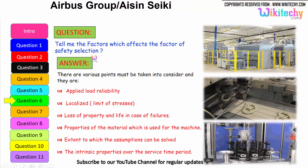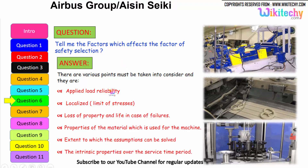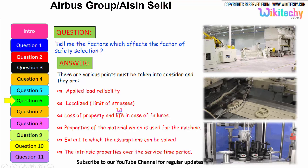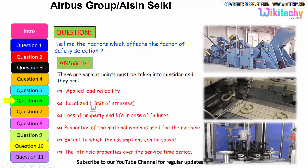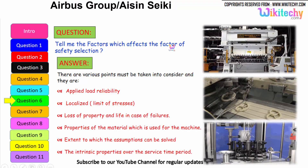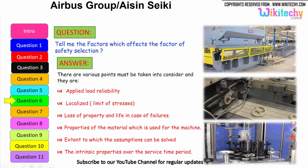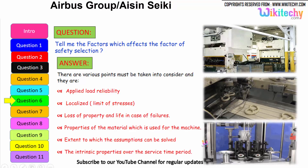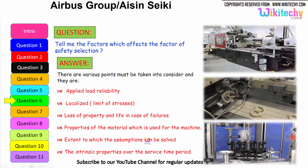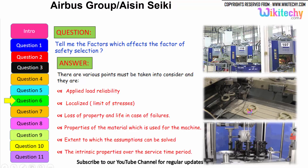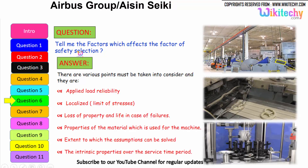Let us see the factors which affect the factor of safety selection. Some of the factors are: applied load reliability, limit of stresses thus localized, and loss of property and life in case of failures. Properties of the material used for the machine is also a very important factor. The extent to which the assumptions can be solved — how much it will extend, compress, or otherwise — needs to be considered. The intrinsic property over the service time period and how it will sustain everything are factors we need to account for in factor of safety selection.